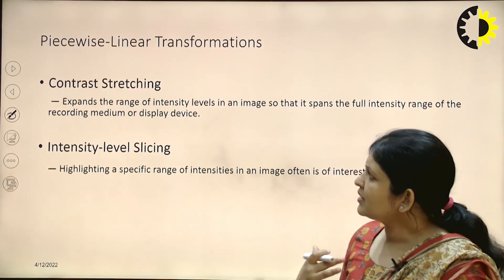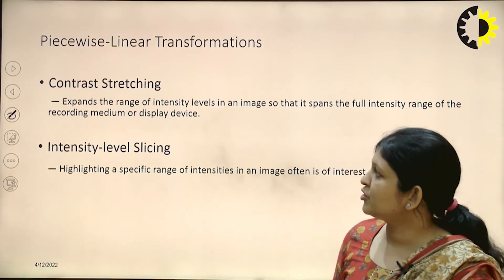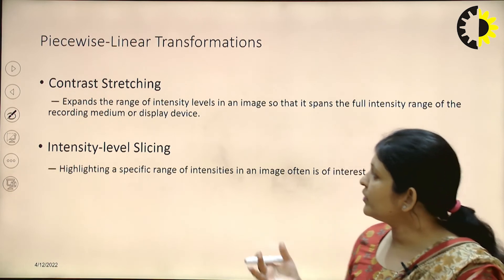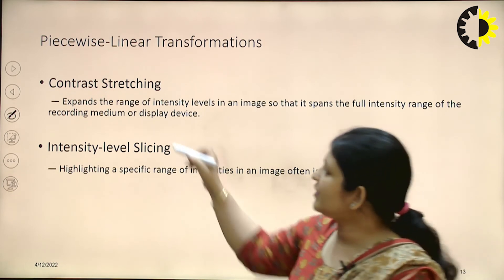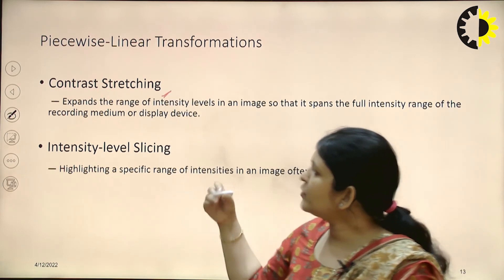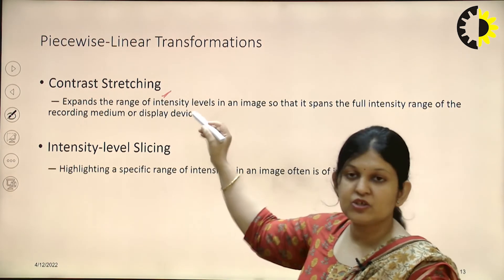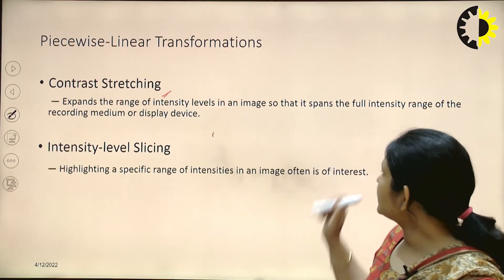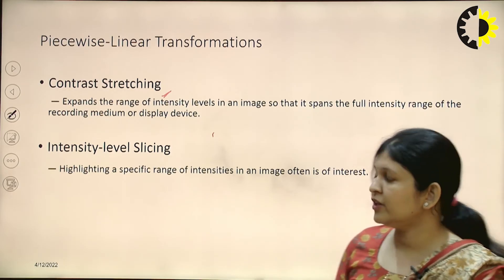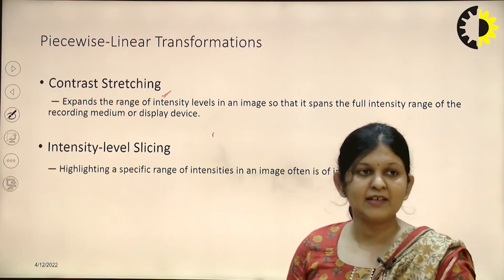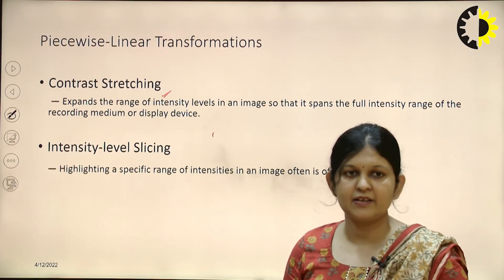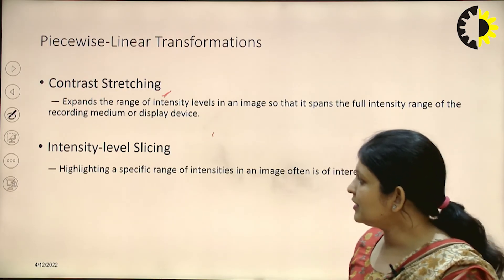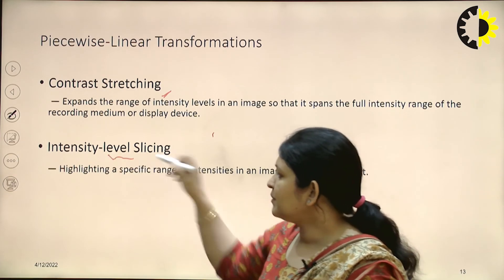Next is piecewise linear transformation. First we have contrast stretching, where we expand the range of intensity levels in an image so it spans the full intensity range of the recording medium or display device.